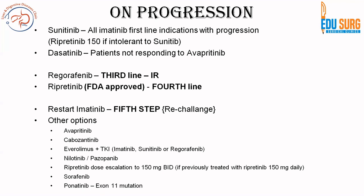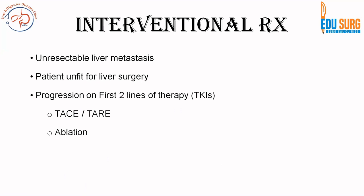This is a very important slide with many practical exam points. First-line therapy: imatinib, sunitinib, and avapritinib. For imatinib, second-line is sunitinib or ripretinib; for avapritinib, second-line is dasatinib. Third-line is regorafenib, fourth-line is ripretinib, and fifth-line is all other discussed drugs. Regarding interventional therapy, it is used for unresectable liver metastasis, when the patient is not fit for surgery, or is progressing on the first two lines of therapy, making it the third-line option. TACE, TAE, and ablation can be used based on feasibility.